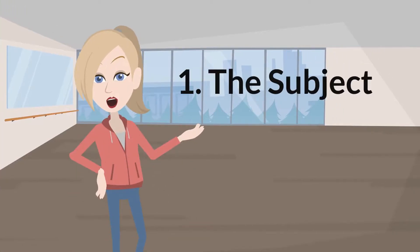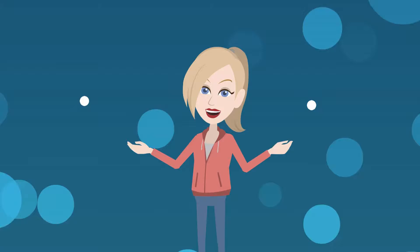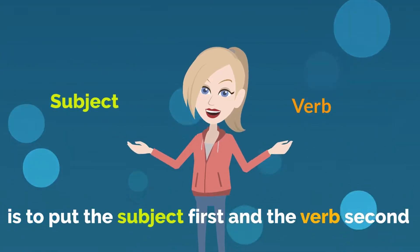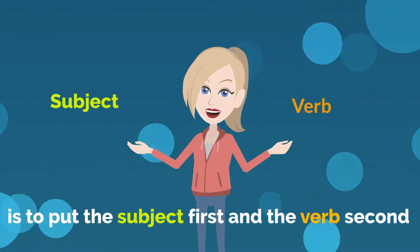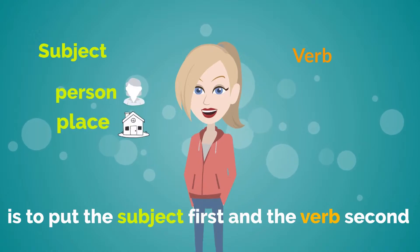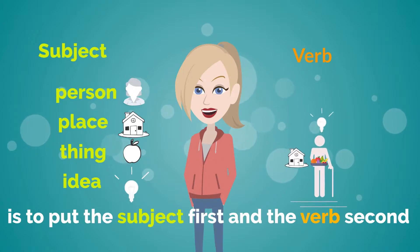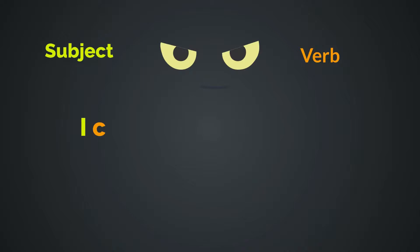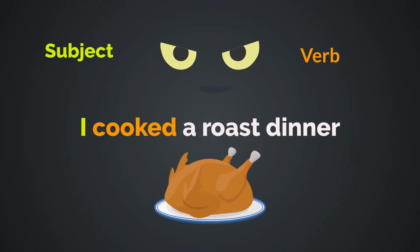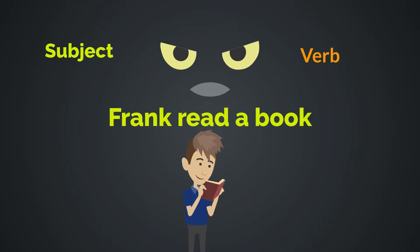1. The subject. One of the best ways to start a sentence is to put the subject first and the verb second. The subject of a sentence is the person, place, thing or idea. It has to be followed by a verb — a word that tells you what the subject is doing. For example: I cooked a roast dinner. The dog ran home. Frank read a book.